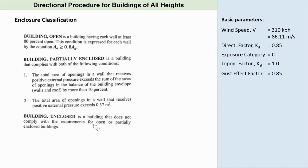Enclosure classification. The code provides criteria to classify whether a building is enclosed, partially enclosed, or open building. An open building is a building having each wall at least 80% open. Two conditions are needed to comply for the building to be considered as partially enclosed, as stated in the code. In our case, the building is given to be an enclosed building.